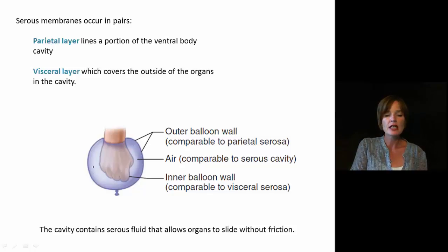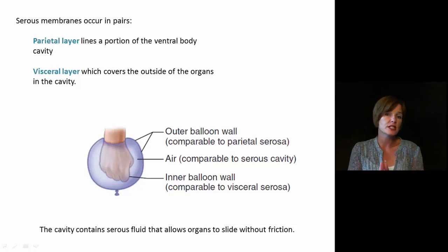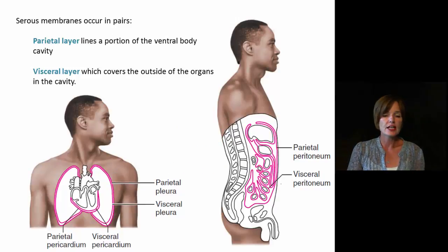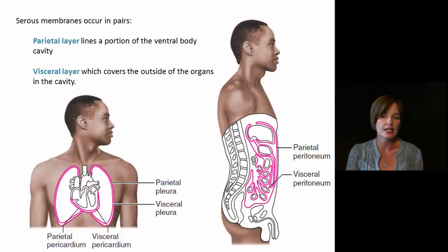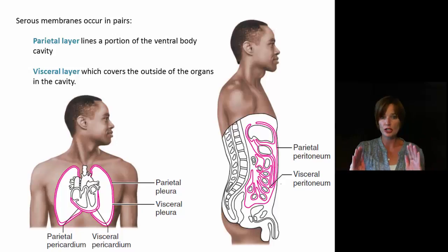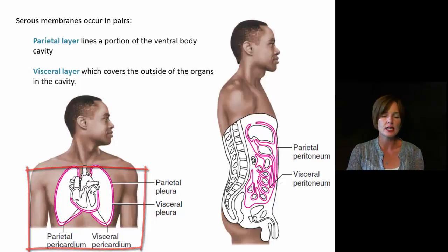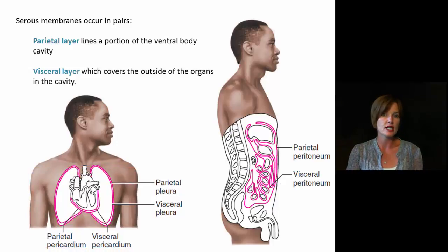There can also be some fluid in the space between the two membranes, called serous fluid. These membranes are pretty close together but most of the time have some fluid between them, allowing any organs in that cavity to move around without a lot of friction. We name serous membranes according to the cavity they line — they always have two layers, the parietal layer on the outside and the visceral layer on the inside. For example, we have the parietal pericardium lining the pericardial cavity, and then the visceral pericardium.